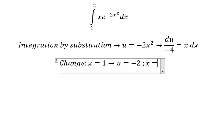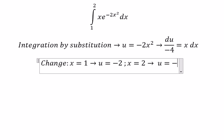If x equal to number 2, so we put number 2 in here. You got u equal to negative number 8.